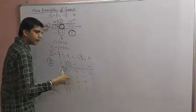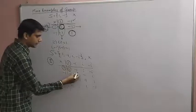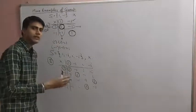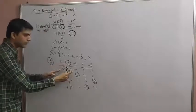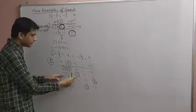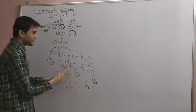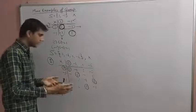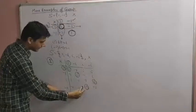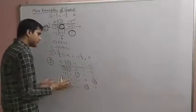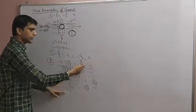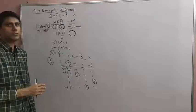For inverses, search for the identity element 1 in each row. The element 1 appears when we multiply 1×1, so 1 is inverse of itself. -1×(-1)=1, so -1 is inverse of itself. i×(-i)=1 and (-i)×i=1, so i and -i are inverses of each other.